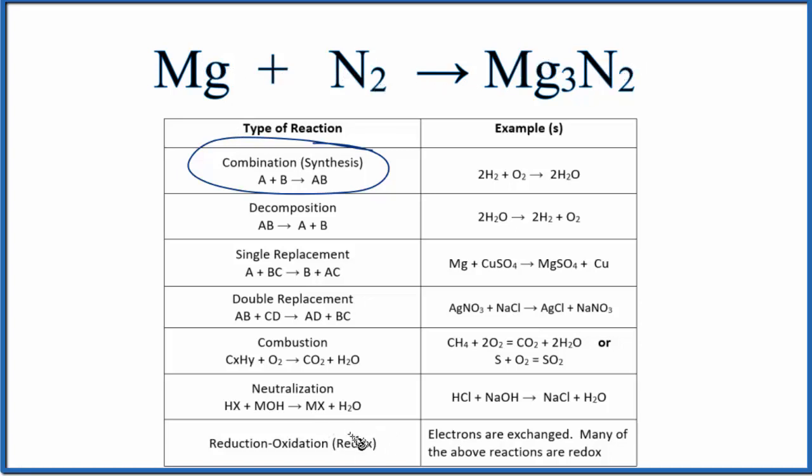But because the oxidation states change, we could also call this a reduction oxidation reaction, a redox reaction. So if we wrote the oxidation numbers for the magnesium, that would be zero because it's just a single element here. No charge.